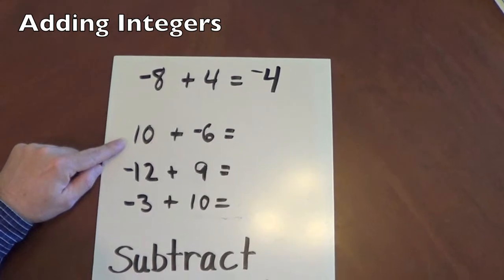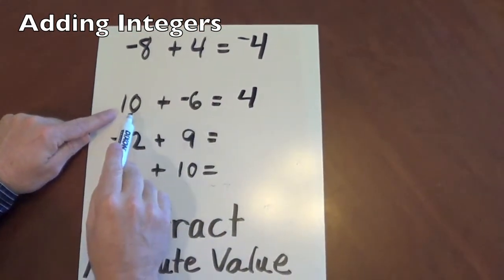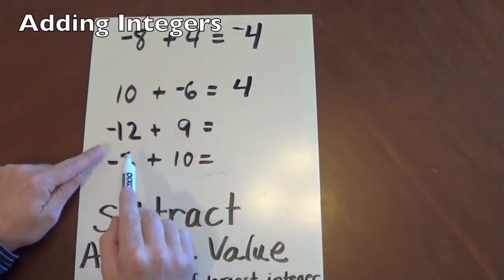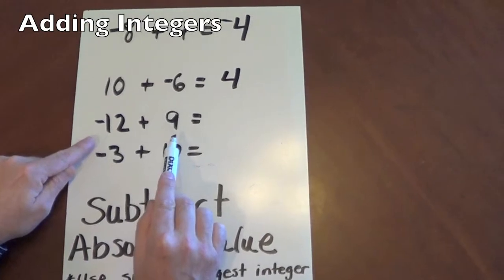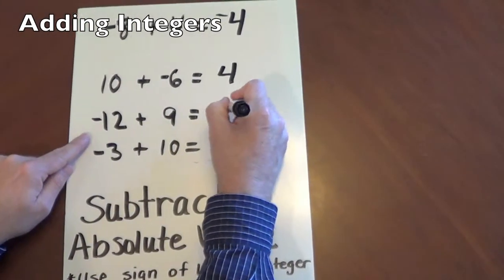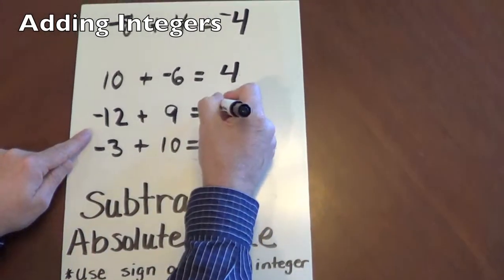10 plus negative 6, we subtract, we get 4. The sign of our largest integer is positive. So our answer is positive 4. Negative 12 plus 9, we subtract the absolute value and get 3. And the sign of our largest integer is negative. So our answer is negative 3.